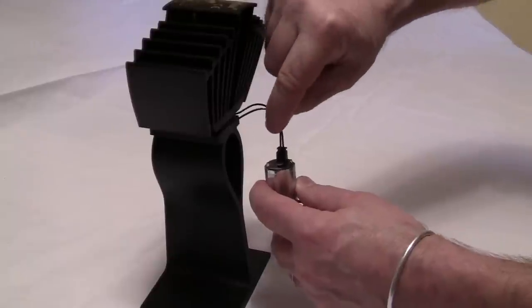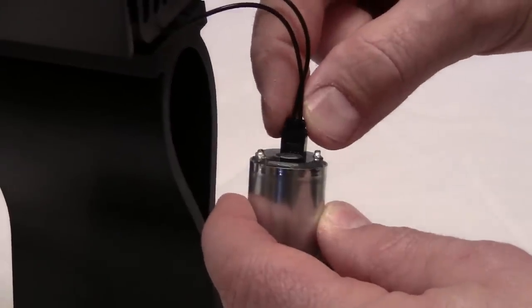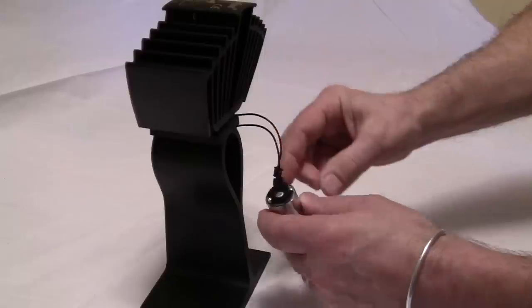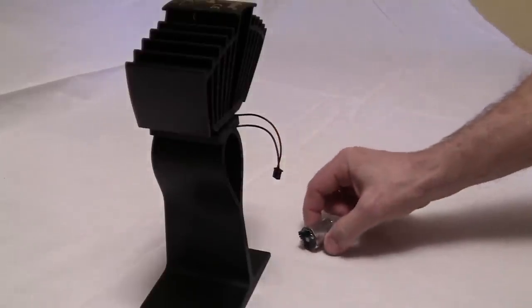Now we do not want to grab the wires from here. What we want to do is grab the wires right at the connector. And with a little bit of a wiggle we can remove the motor and place it there.